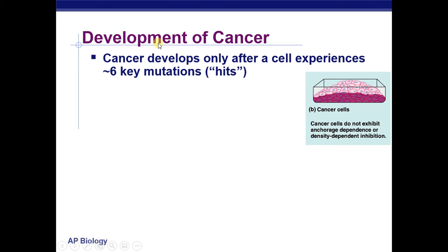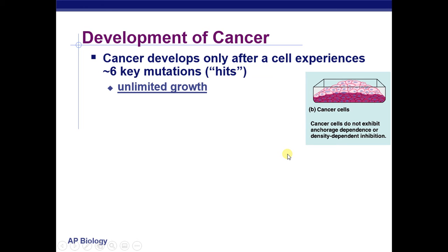Cancer generally develops only after a cell experiences approximately seven or more key specific mutations — it's cumulative, not a single mutation causing cancer. This buildup of DNA mutations allows cells to grow in unlimited quantity and for unlimited time. They don't exhibit anchorage dependence, meaning they don't need to be attached to anything to divide, and they're not density inhibited, so no matter how many cells surround them they just keep growing.